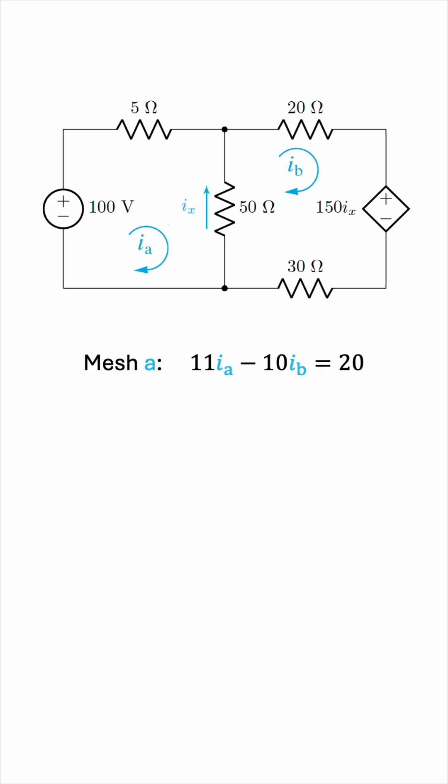And now we can turn our attention to the second mesh. We have positive 150 Ix. Now we have a 20 ohm resistor and a 30 ohm resistor in series, so this will be 50 times Ib. And again, the 50 ohm resistor hanging in the middle is common to both meshes. Remember, your mesh minus other meshes. So 50 times Ib minus Ia this time. We're done, so this must be equal to 0.